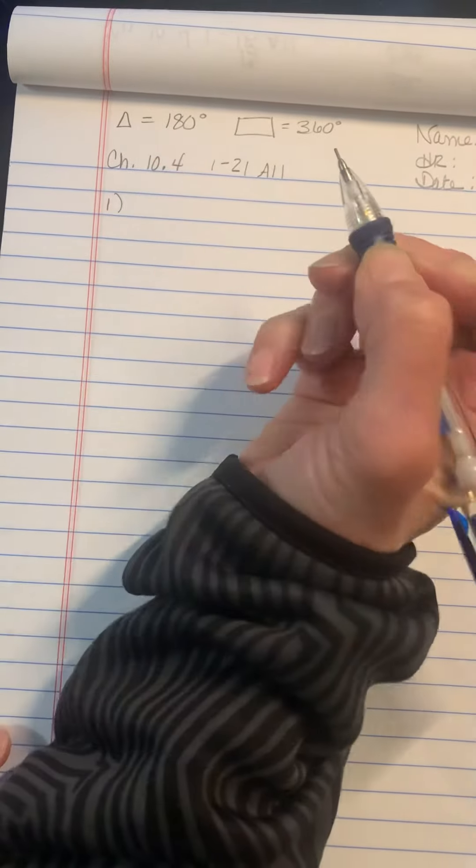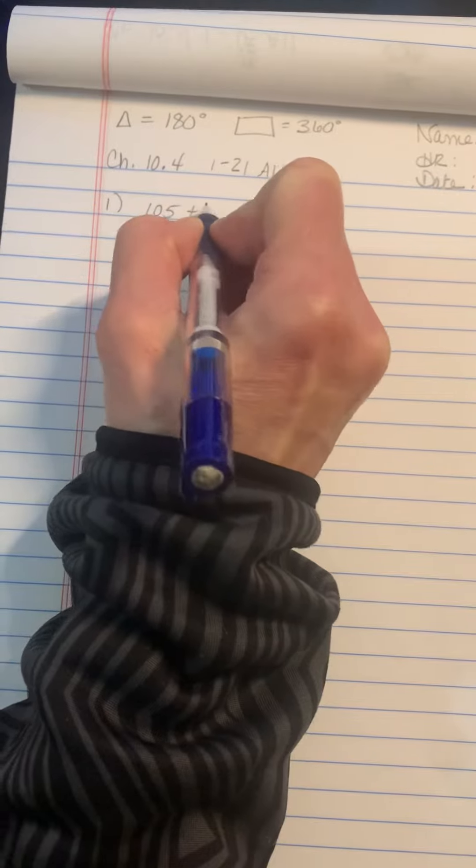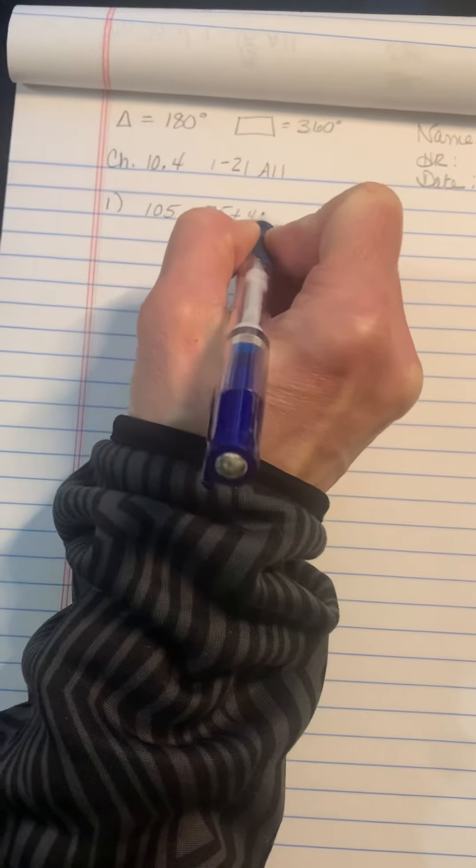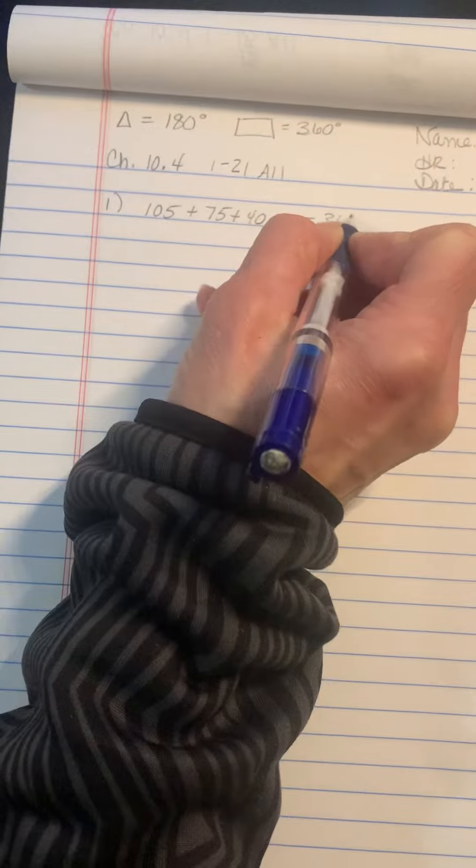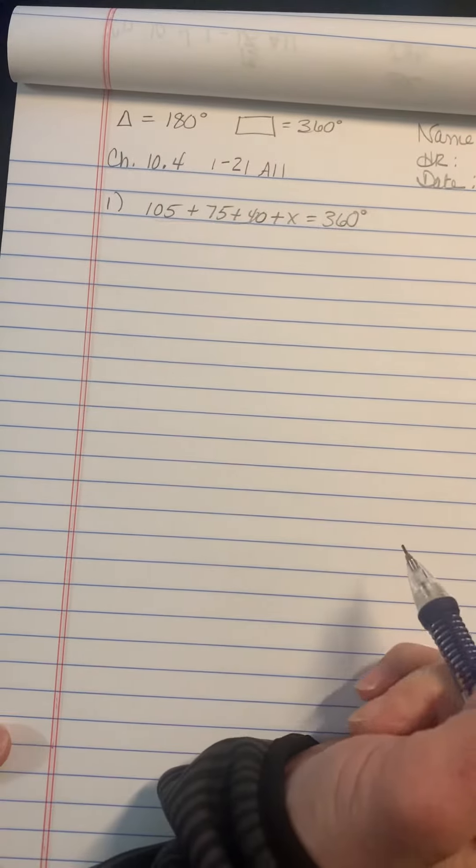So if we're missing one of the angles, like we are in question number one, you just go 105 plus 75 plus 40 plus x equals 360. Put it together, solve for x, and you'll find that missing degree.